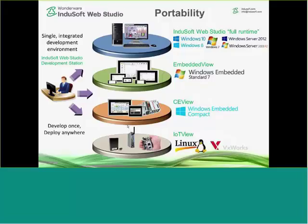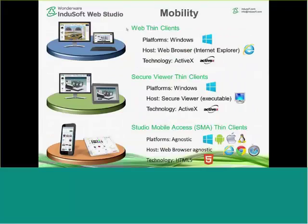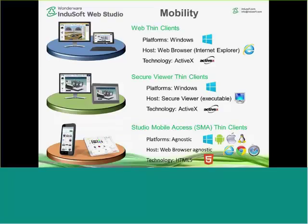We have three different types of thin clients. The first one is called WebThinClient, which must use Internet Explorer. It's used, for example, in an office environment where a production supervisor opens Internet Explorer, points to a machine on the floor, and is able to view and interact with those screens — with security — just as they're happening out on the plant floor.